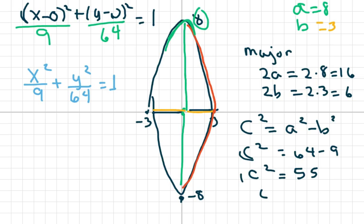So c, if you take the square root, is plus or minus square root of 55.